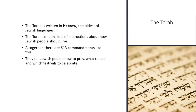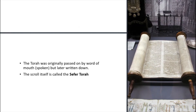The Torah is written in Hebrew — the oldest of the Jewish languages. It contains lots of instructions about how Jewish people should live, and all together there are 613 commandments telling Jewish people how to pray, what to eat, and which festivals to celebrate. It was originally passed on by word of mouth but later written down, and the scroll itself is called the Sefer Torah.